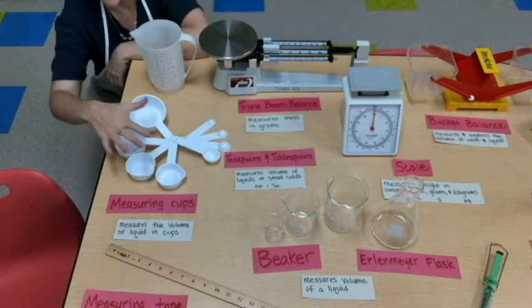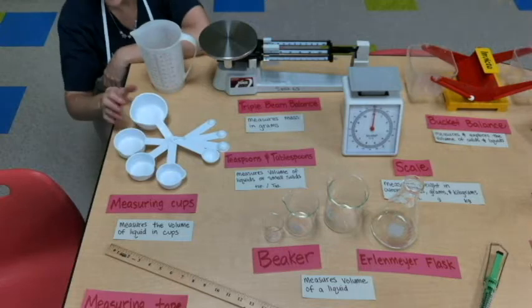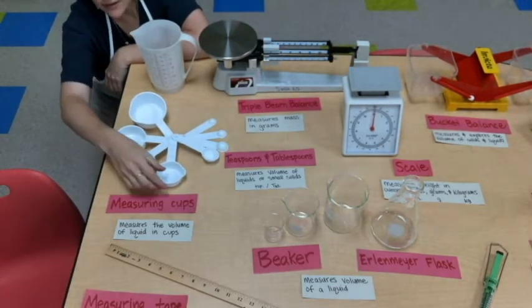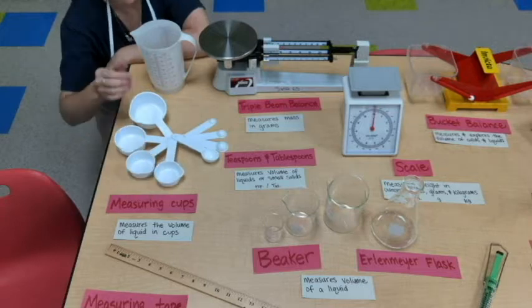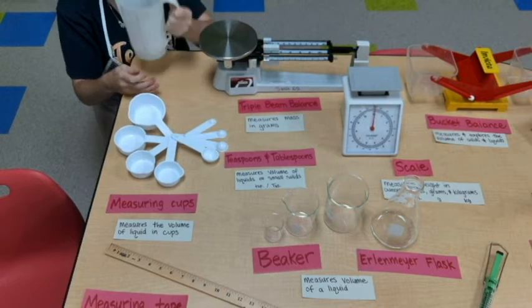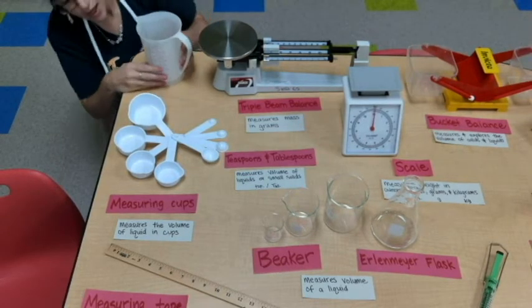Here we have measuring cups, either a cup, or this one is half a cup, this is a third, and this is one-fourth cup, or you might see a measuring cup that looks almost like a glass or a pitcher with a handle.